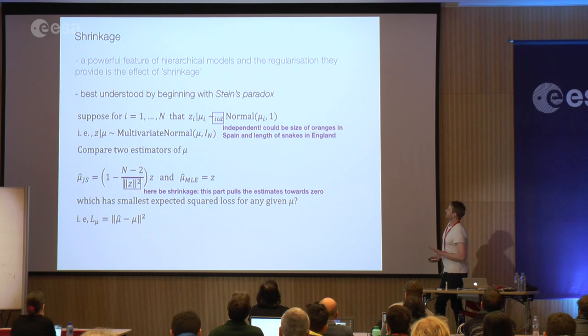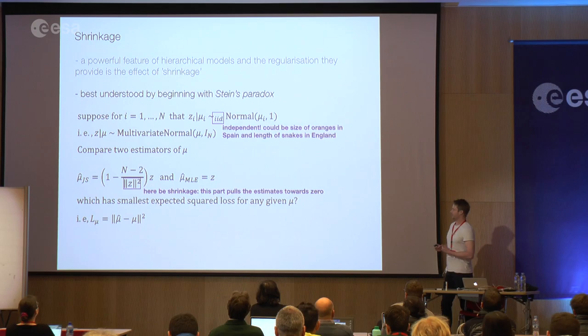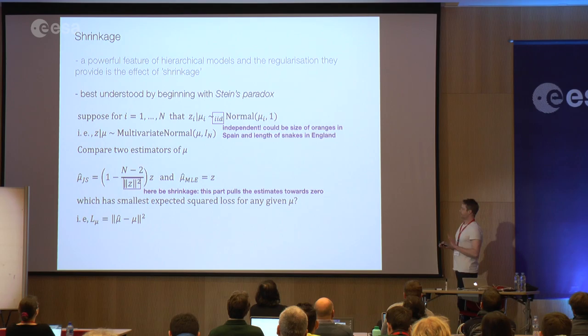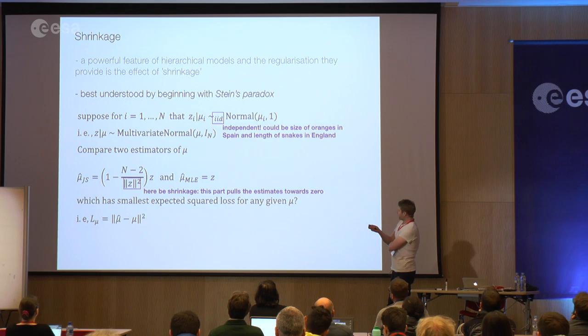Shrinkage is best understood by beginning with Stein's paradox. It's genuinely a paradox, and it gives you a feel for the bias-variance trade-off you hear a lot about in statistics and machine learning.